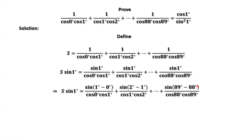Why are we doing this? We want to match the numerator to the denominator. For the first term, we have 1° and 0° in the numerator matching 1° and 0° in the denominator. For the second term, 2° and 1° in the numerator match 2° and 1° in the denominator. For the last term, 89° and 88° in the numerator match 89° and 88° in the denominator.